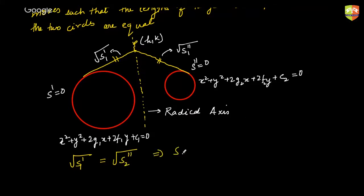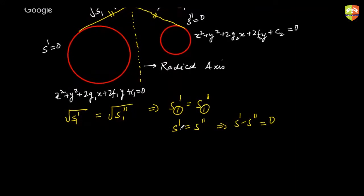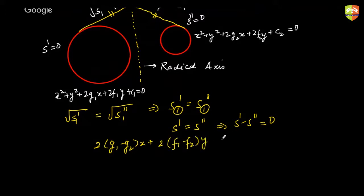If you simplify it, it simply becomes S₁' = S₁''. Since S₁ is because you are putting the point (h, k), if you generalize it, it becomes S' = S'', which is the same as saying S' − S'' = 0. That is nothing but 2(g₁ − g₂)x + 2(f₁ − f₂)y + (c₁ − c₂) = 0.